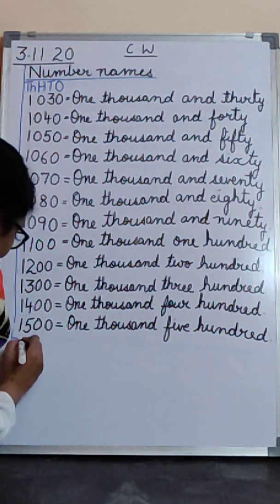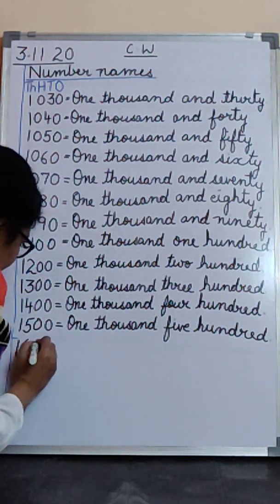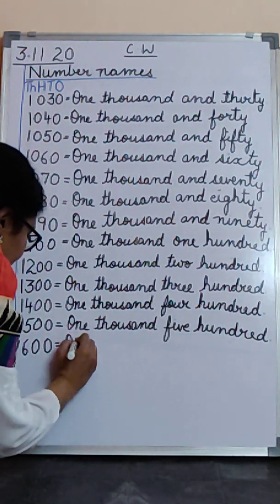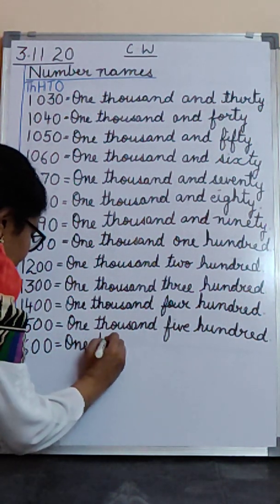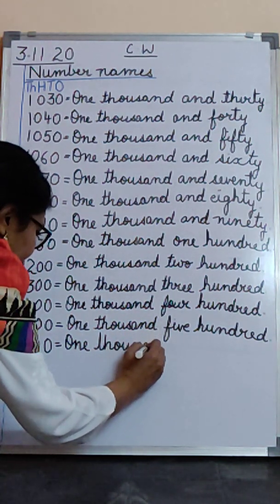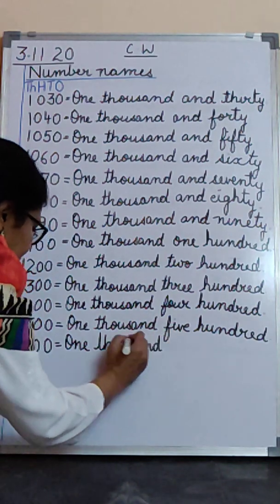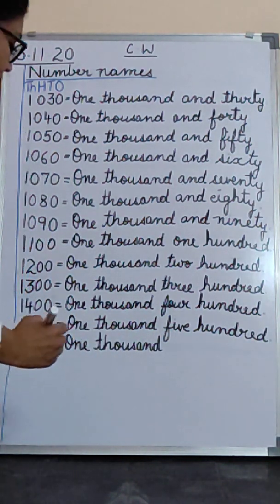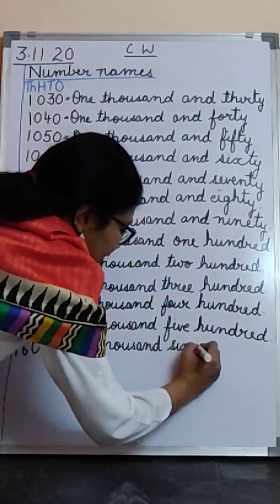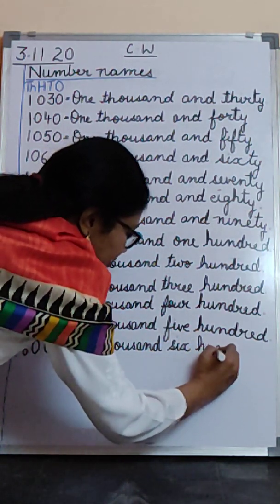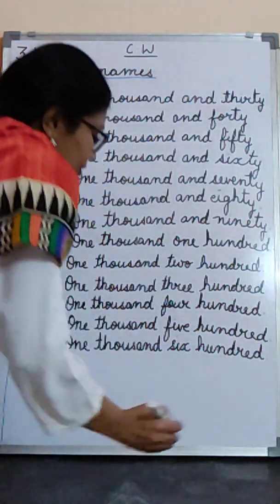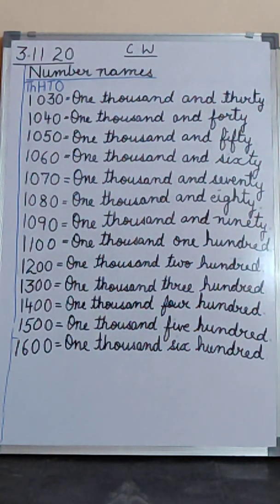Then 1,600. T-H-O-U-S-A-N-D, one thousand. S-I-X, six. H-U-N-D-R-E-D, hundred. 1,600.